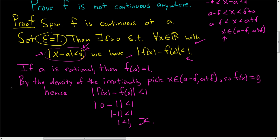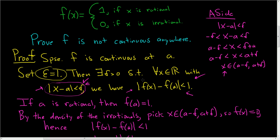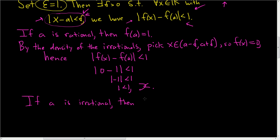Now we can play the same game by taking the other case. So we've covered the case when a is rational. If a is irrational, then, well, when a is irrational, let's scroll back up. If a is irrational, f(a) is 0. So then f(a) is equal to 0. Let me go ahead and write the function here again so we can see it. It's 1 if x is rational and 0 if x is irrational. So if a is irrational, then f(a) is equal to 0.